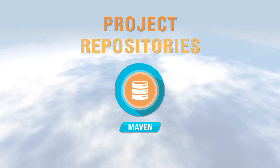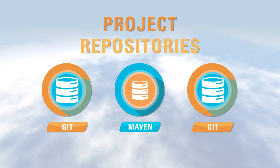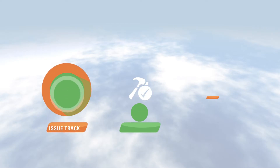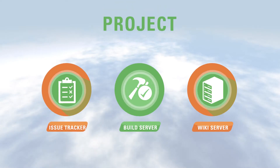Each project can have one Maven repository and multiple Git repositories for managing the source code. Each project also comes with an issue tracker, a build server, and a wiki server for internal documentation.